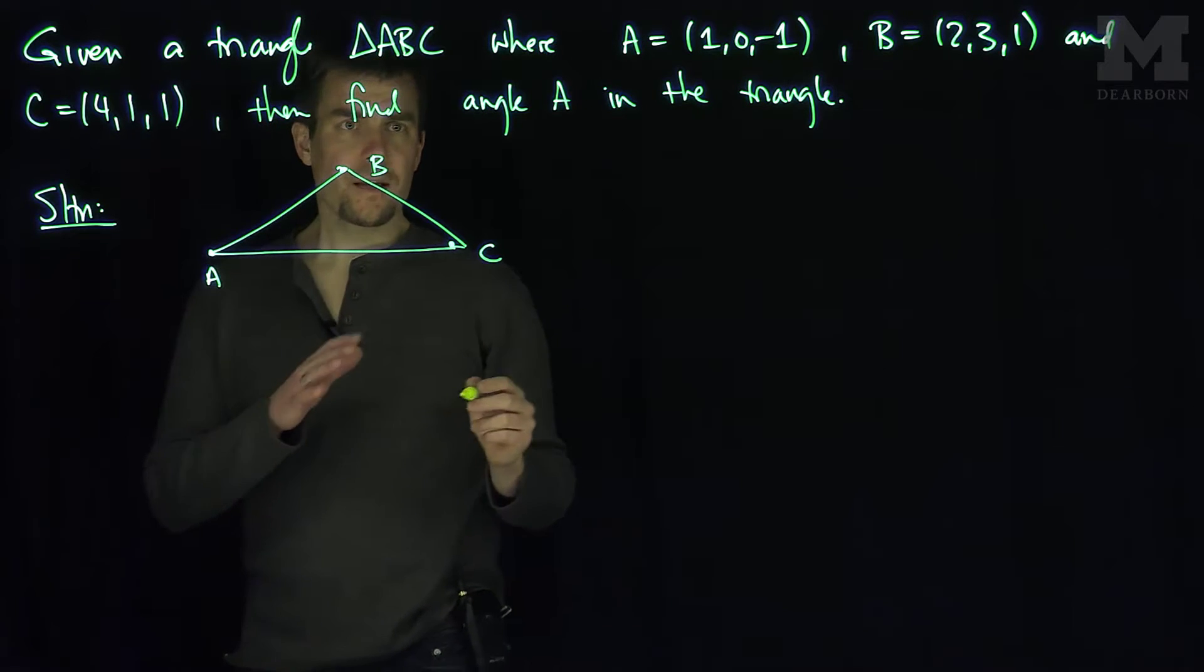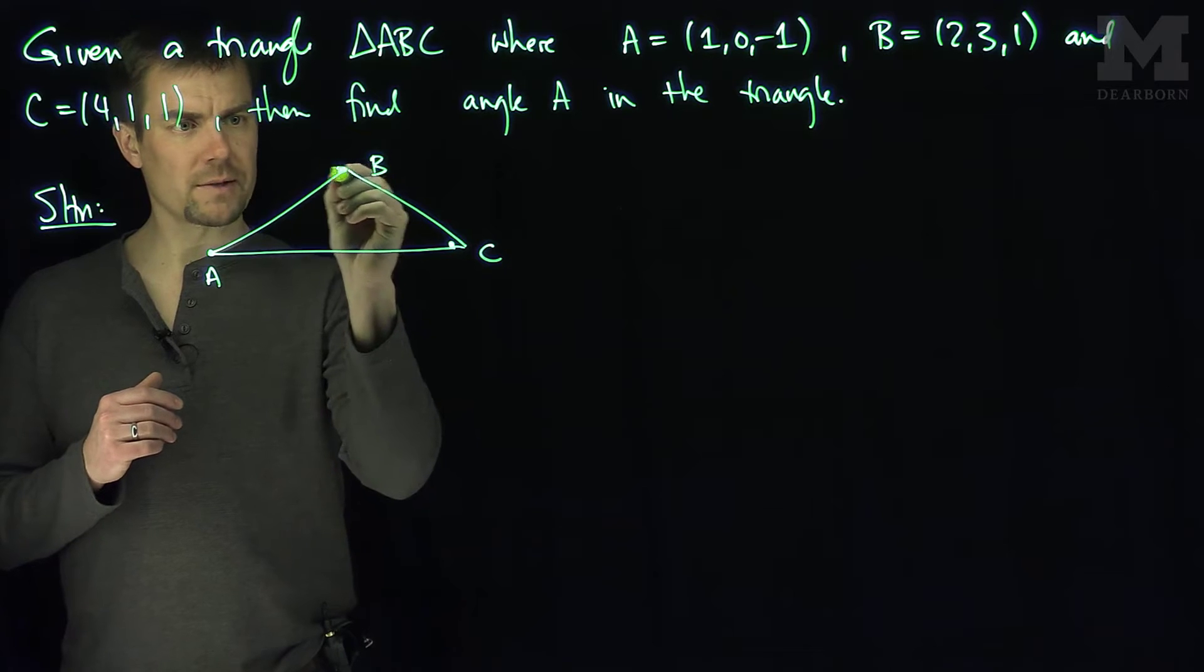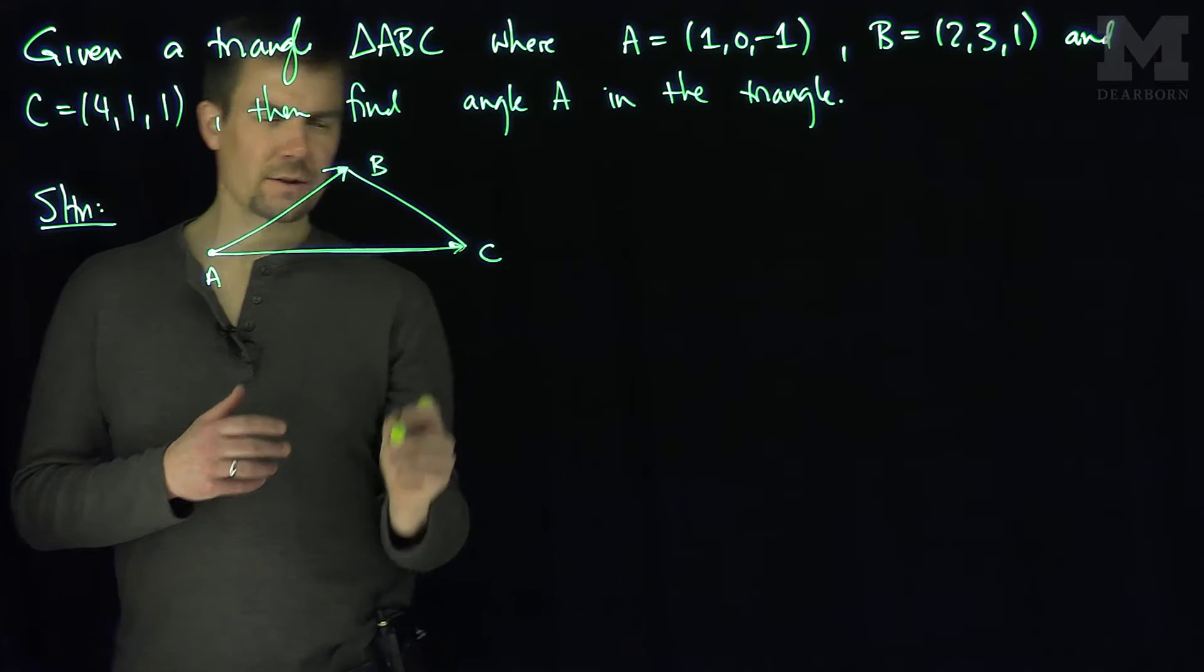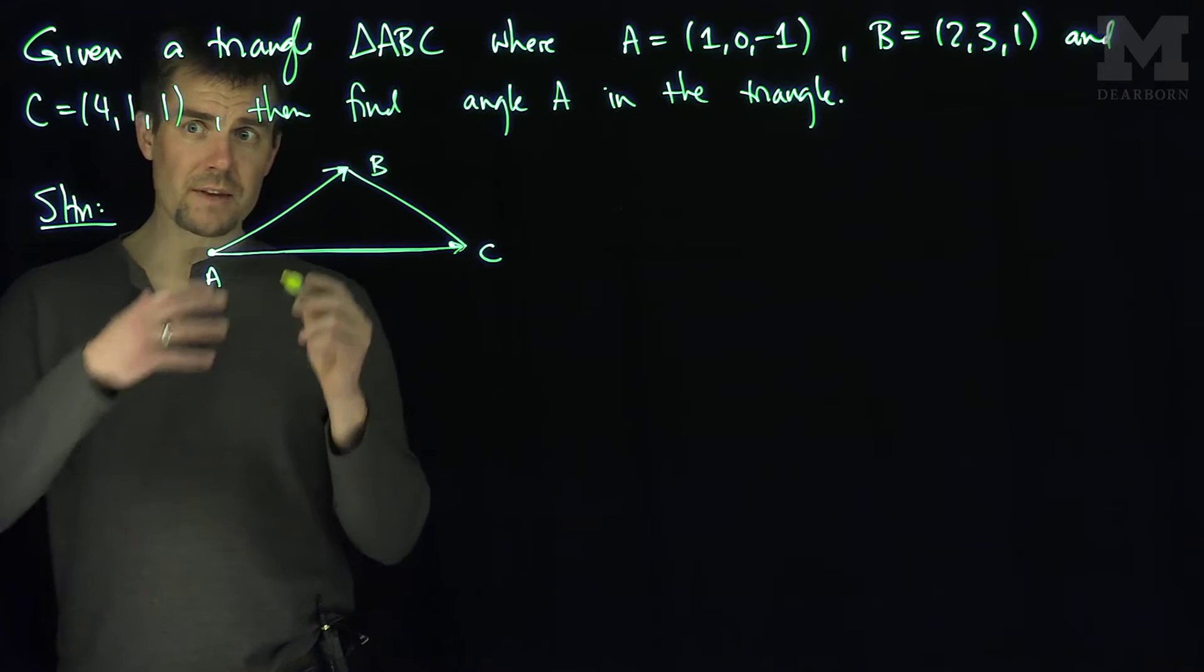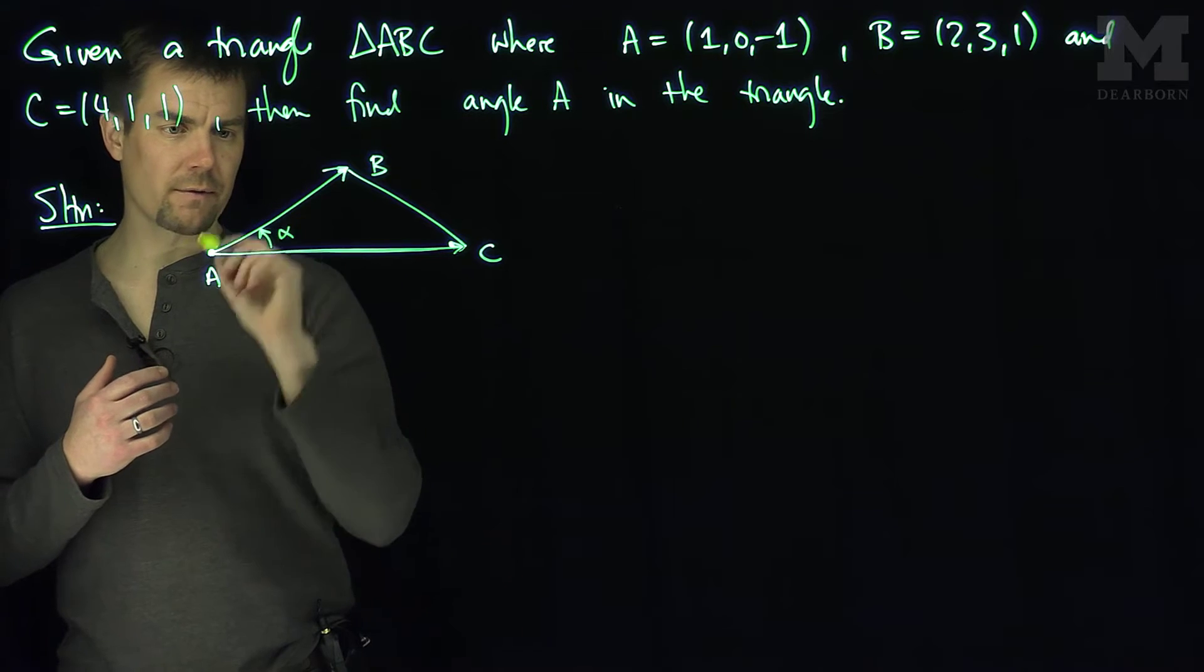Now what I can do is I can think of this triangle as a vector. I can think of this as going from the point A to the point B as a vector, and I can go from the point A to C as a vector. And so really I'm asking a question of the angle between these two vectors over here. So that's angle A. Let's call that alpha for angle A.